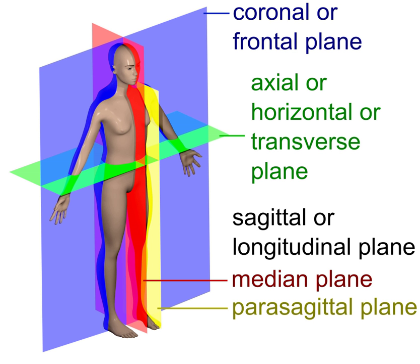A coronal plane is any vertical plane that divides the body into ventral and dorsal sections. It is one of the three main planes of the body used to describe the location of body parts in relation to each other.